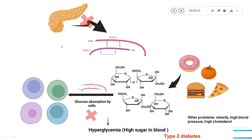In our body, the pancreas secretes insulin, which has chain A and chain B linked by disulfide bridges. Whatever food you eat is broken down into sugars, and these sugars are taken up by your body's cells — a process mediated by insulin. If the pancreas does not produce enough insulin, the cells will not be able to take up glucose. Since it is not taken up by the cells, it remains in the blood, and more sugar in the blood leads to hyperglycemia, which can lead to type 2 diabetes.